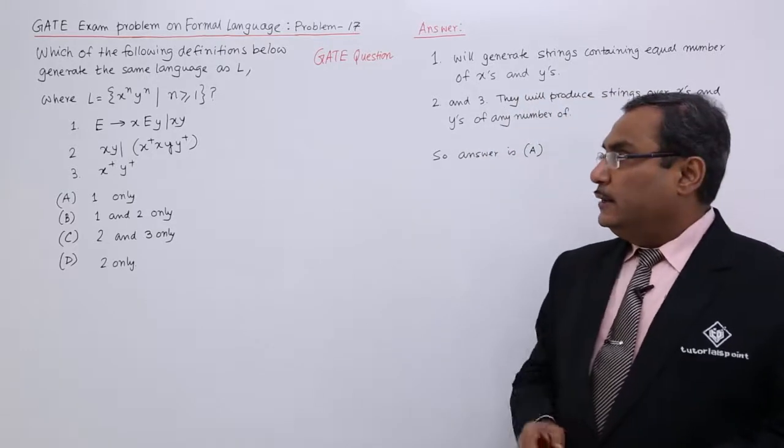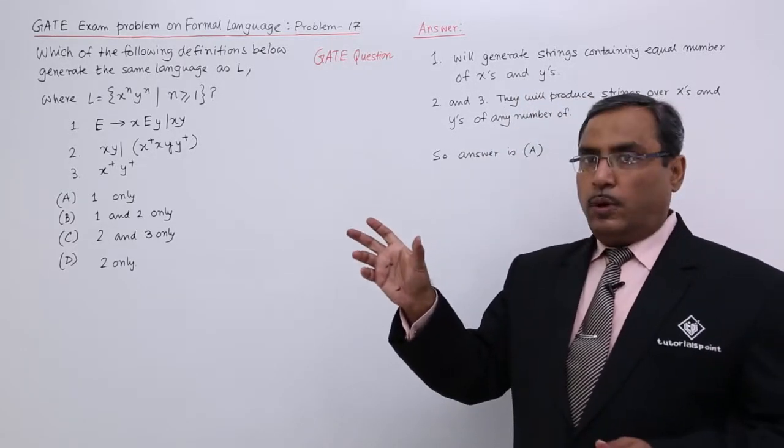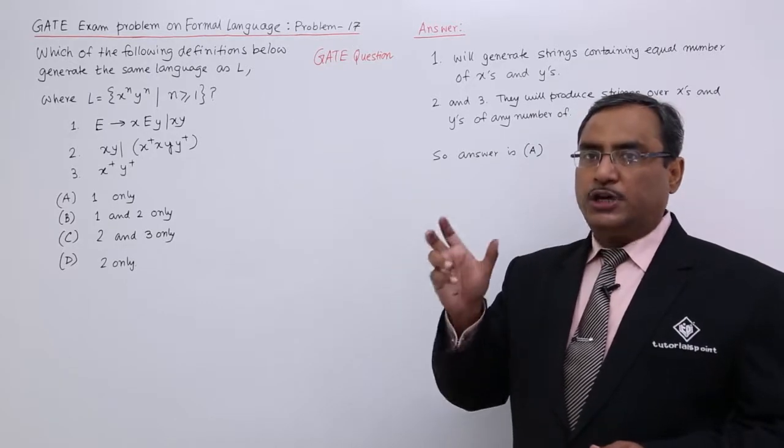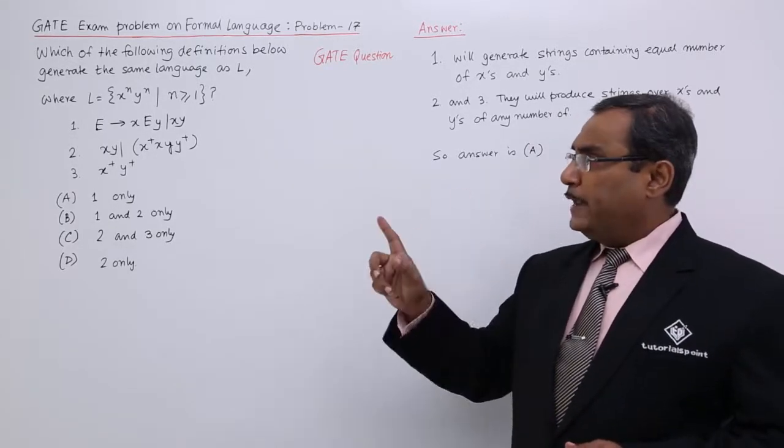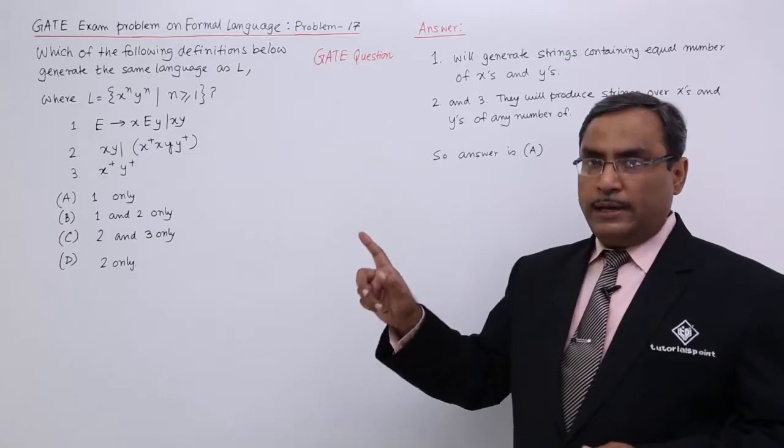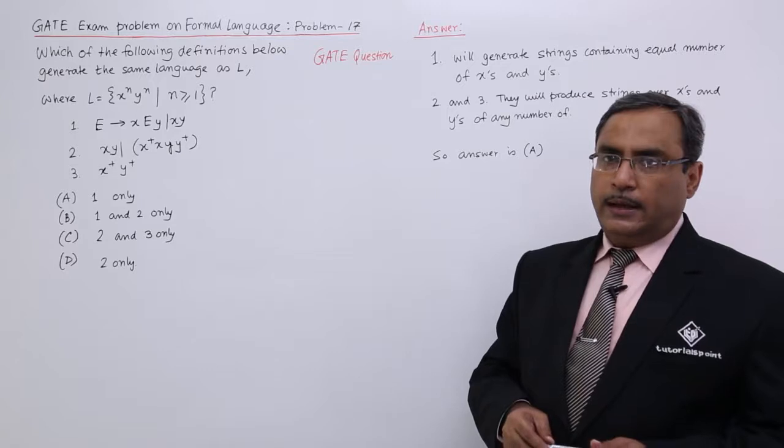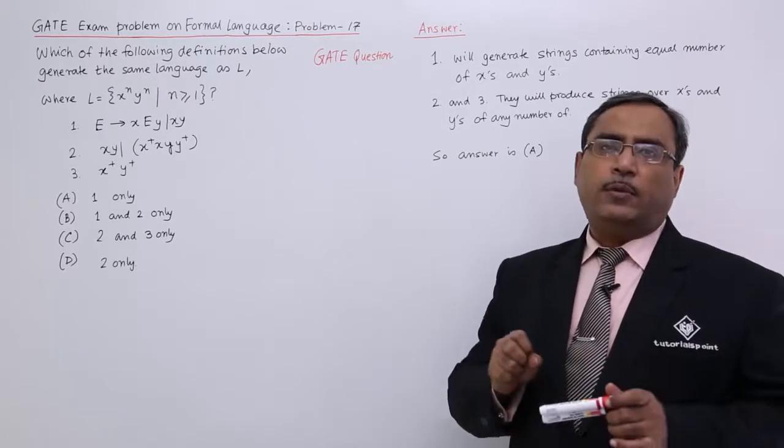That denotes that all the x will come in one chunk, all the y's will be coming in one chunk or block, and number of x will be same as number of y. In the given string, x will come earlier than y will be coming, and there will be no mixing of x and y.